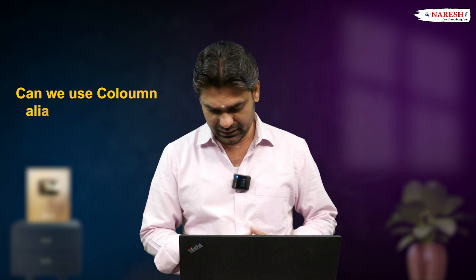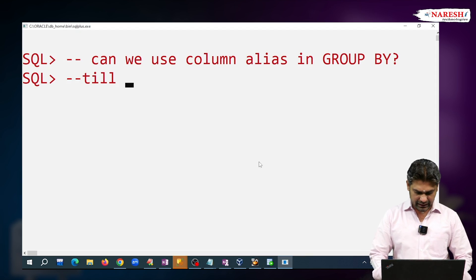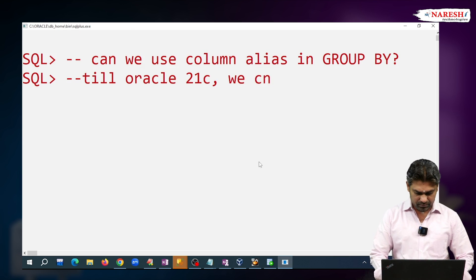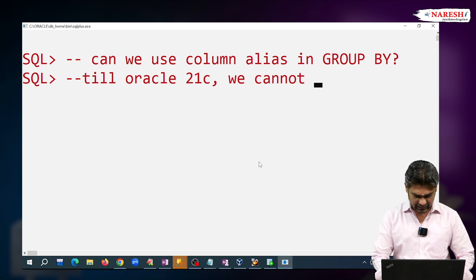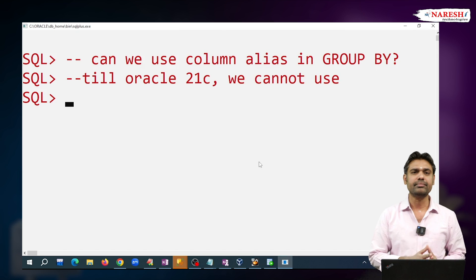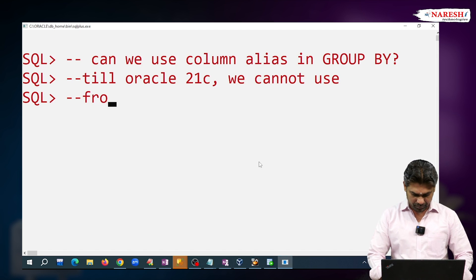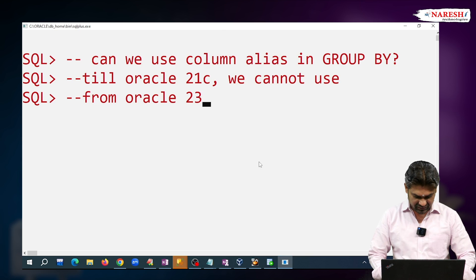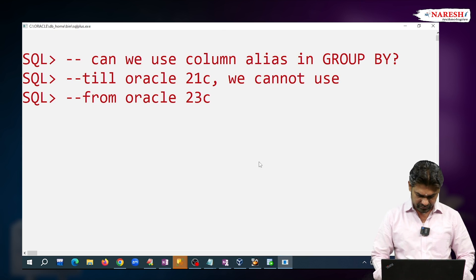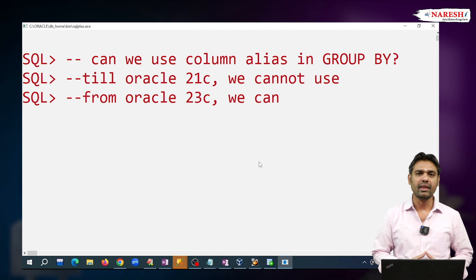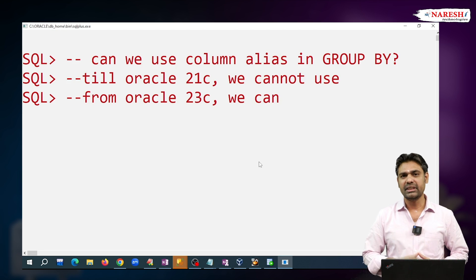The answer is: till Oracle 21c, we cannot use column aliases in GROUP BY. But from Oracle 23c version, we can use column aliases in GROUP BY. Let me show it with an example.